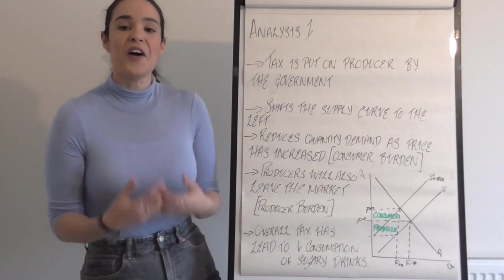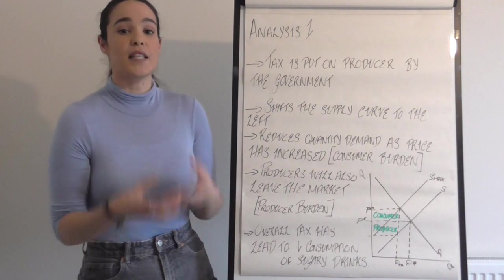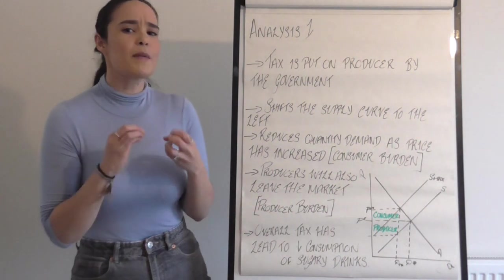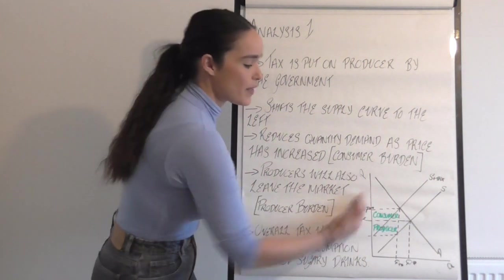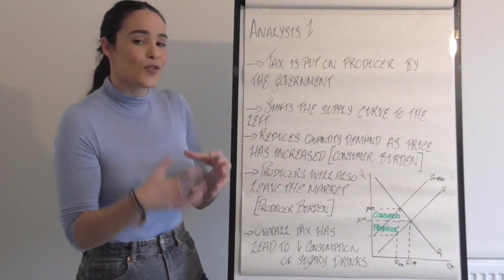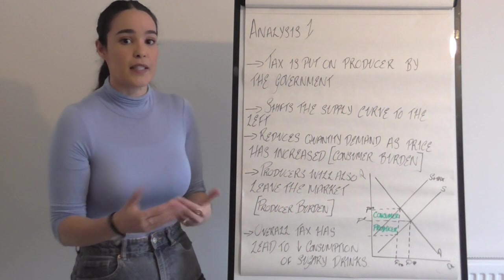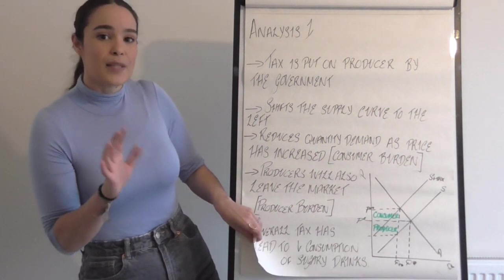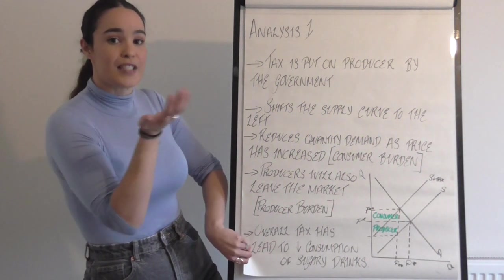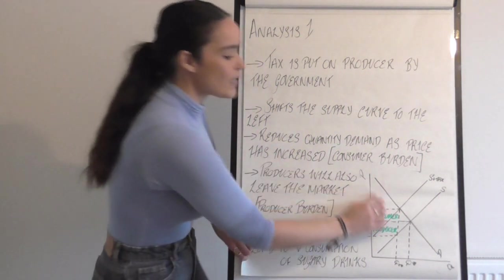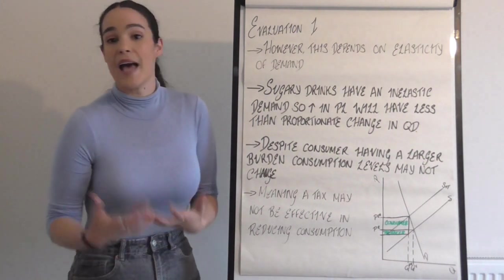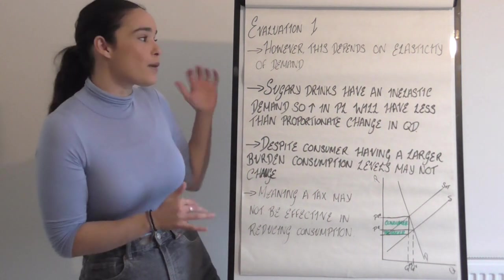Now we have to think about a counterbalance. Evaluation is not an afterthought — you are expected to give deep, balanced evaluation. Think about what is the reality: in theory we want consumption to fall, but why might it not happen in practice? The most obvious balance here is that this outcome only happens as long as demand is elastic. If the demand curve is inelastic, it might not have the same impact, and the tax may not lead to a fall in consumption.